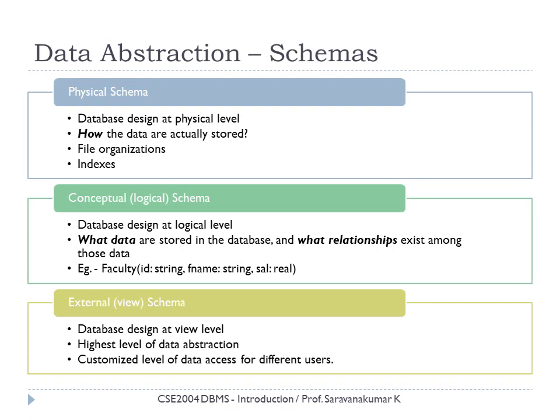At the top level there is the external level — external schema or view schema, sometimes called a sub-schema. It is the database design at the view level and represents the highest level of data abstraction. It is also the most customized level of data access for different users. For instance, as a bank customer I have a view of my own data, but through internet banking I am not able to access all of my data because I am a restricted user.